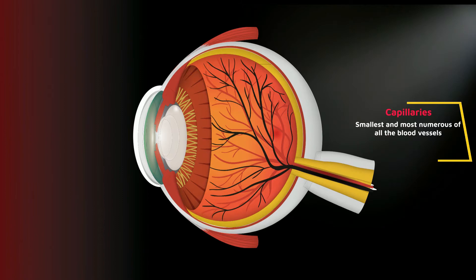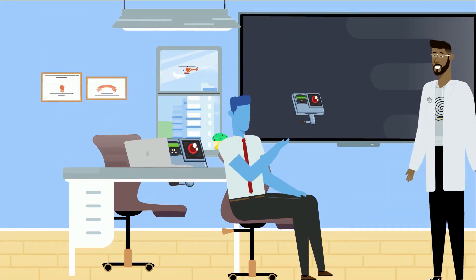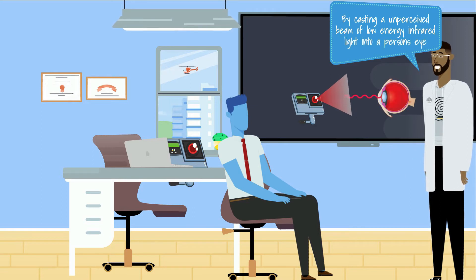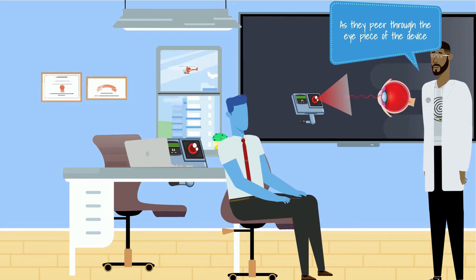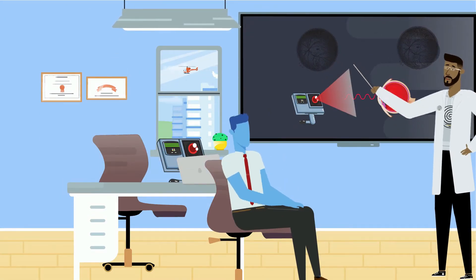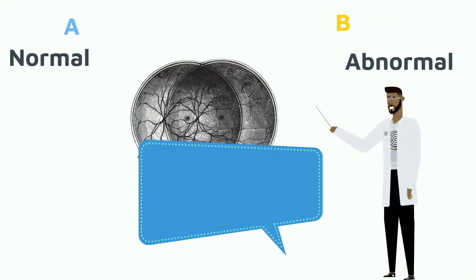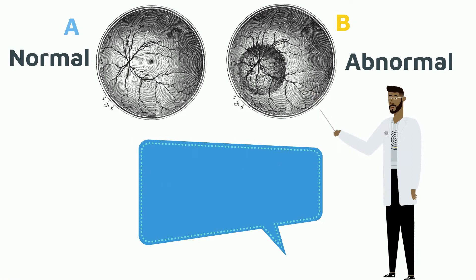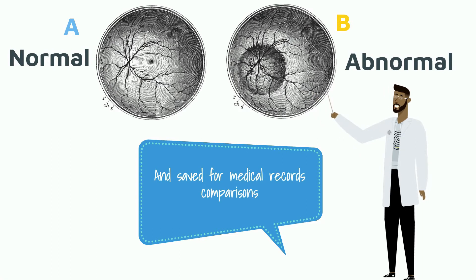But how does it work? The scanner accomplishes this by casting an unperceived beam of low-energy infrared light into a person's eye as they appear through the eyepiece of the device. It then produces digital images of the complex structure and layout of the capillaries. Images which can then be studied to check for health abnormalities and saved for medical record comparisons.